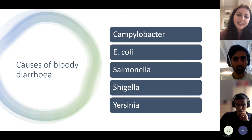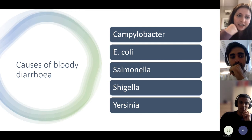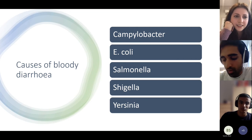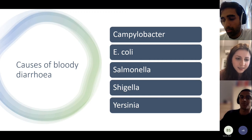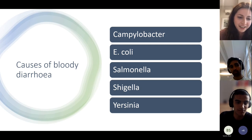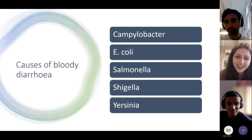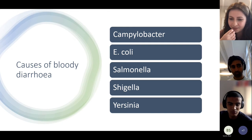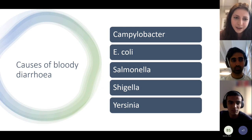Causes of bloody diarrhoea: we've mentioned Campylobacter. Others include Shigella, a strain of E. coli, Salmonella, and Yersinia — so five classic causes to be aware of for questions. IBD can also cause bloody diarrhoea. Giardia is not typically bloody. These are your key five for infectious causes.